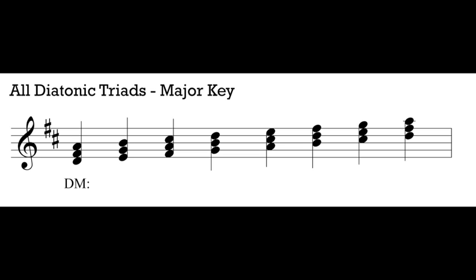The one triad is always going to have the same quality in any major key — the two triad, the three triad, and so on. They are all going to have the same qualities. Some of the triads in a major scale stack up as major triads, with a major third and a perfect fifth above their root. The tonic triad built on scale degree one is a major triad. So is the subdominant triad built on scale degree four — G to B-natural a major third and G to D a perfect fifth. And so is the dominant triad built on scale degree five — A to C-sharp a major third and A to E a perfect fifth. These are all the major triads we can find in a major scale.